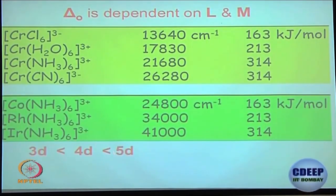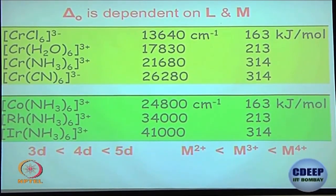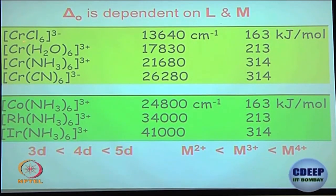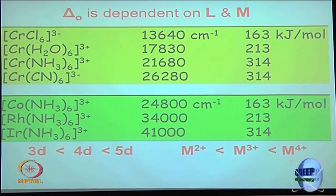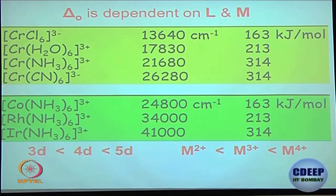The delta₀ increases going from 3d to 4d to 5d metals, and with higher oxidation states. If you keep the metal and oxidation state constant and vary the ligand — for example chromium complexes with chloride, water, ammonia, and cyanide — you can see how the T2g–Eg splitting increases, directly reflecting the ligand field strength. This is the basis of the spectrochemical series.